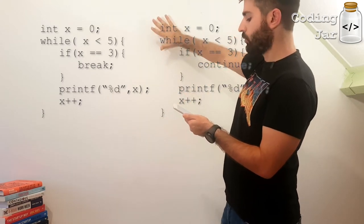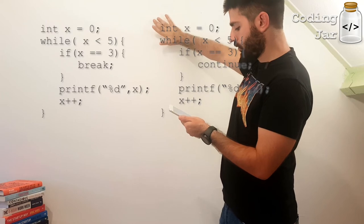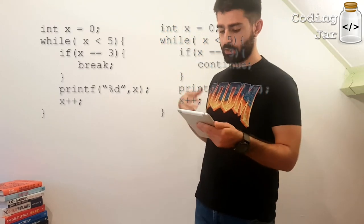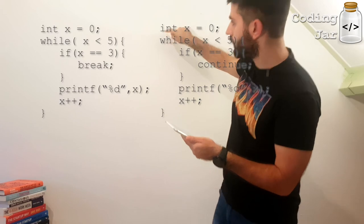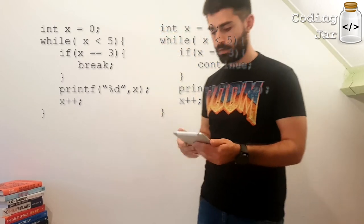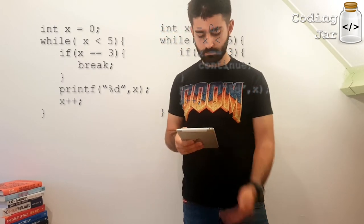And for continue, the same thing, it will print 0, 1, 2, and 4. 3 will not be printed because we have the continue statement. It will go back to the beginning and, you know, do its stuff again.